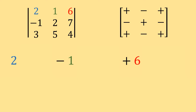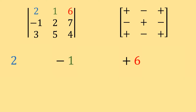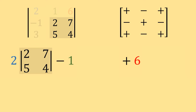Now that we've brought the values down from the row or column we're using and changed their signs according to the sign chart, we multiply each one of these values by the minor of each one of these positions. The minor of this value 2 in the upper left-hand corner is the determinant of the matrix left over when you cross out the row and column associated with position of that value. So if I cross out row 1 and column 1, I'm left with the little square matrix 2, 7, 5, 4. I multiply my 2 by the determinant of that leftover matrix, and then we do that for each other value.